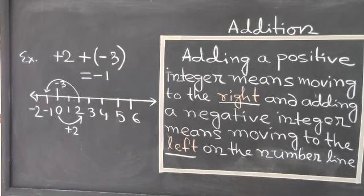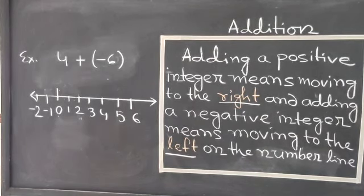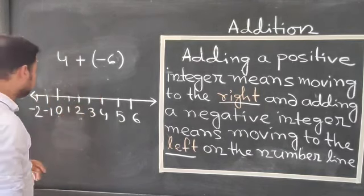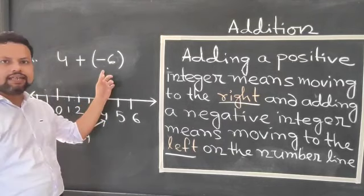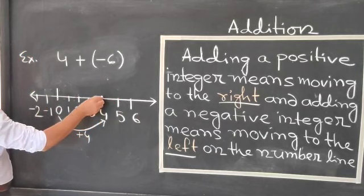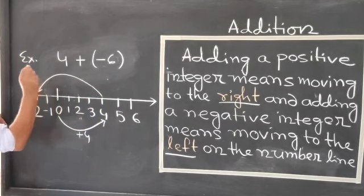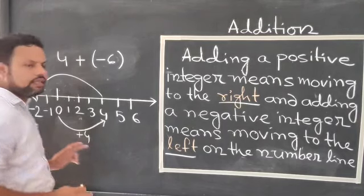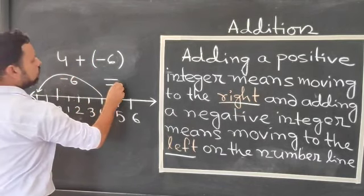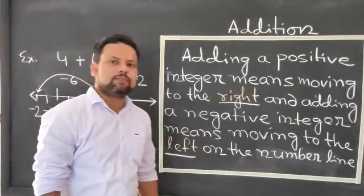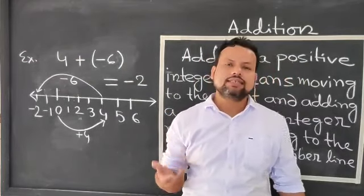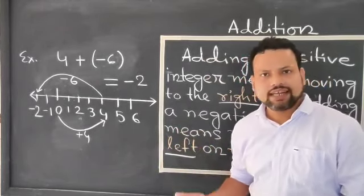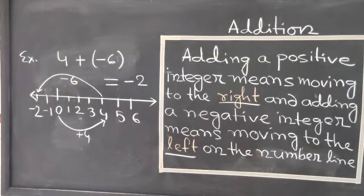Another example: 4 plus minus 6. Starting from 0, move right 4 gaps to reach plus 4. Then, since minus 6 is negative, move left 6 gaps. We end at minus 2. So 4 plus minus 6 equals minus 2. In this way, we do these sums. Hope you understand. If not, just watch this video again. That's all for today — bye, students. Thank you.